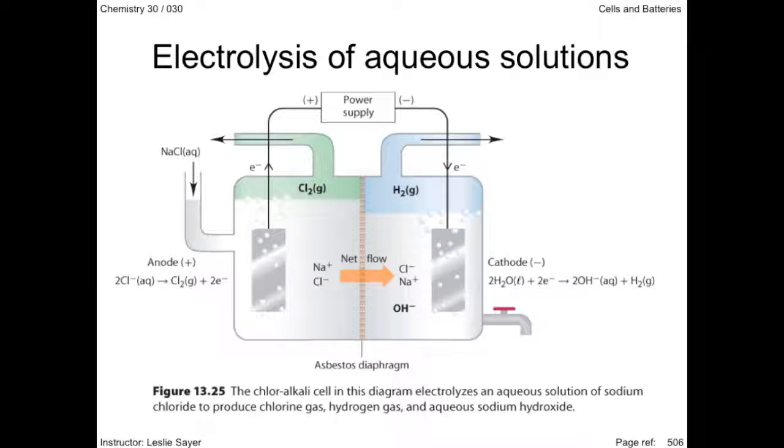The products from this cell, chlorine and hydrogen gas and sodium hydroxide, are widely used in industry. An understanding of over potential enables more accurate predictions of electrolytic outcomes than simply using standard electrode potentials.